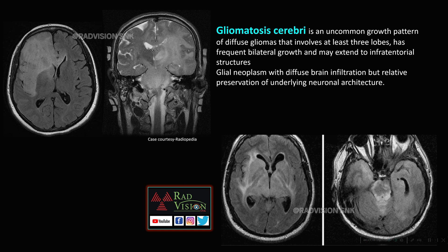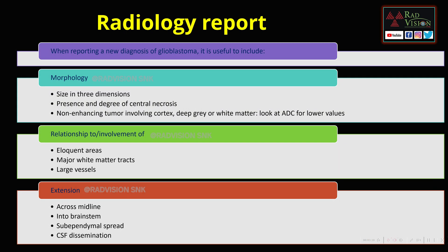When reporting a glioblastoma, the morphology to include is: size in three dimensions, presence and degree of central necrosis, non-enhancing tumor involving cortex and deep gray-white matter, ADC values for low values, involvement of eloquent areas, major white matter tracts and large vessels. Extension should be reported across the midline, into the brainstem, subependymal spread, and CSF dissemination.